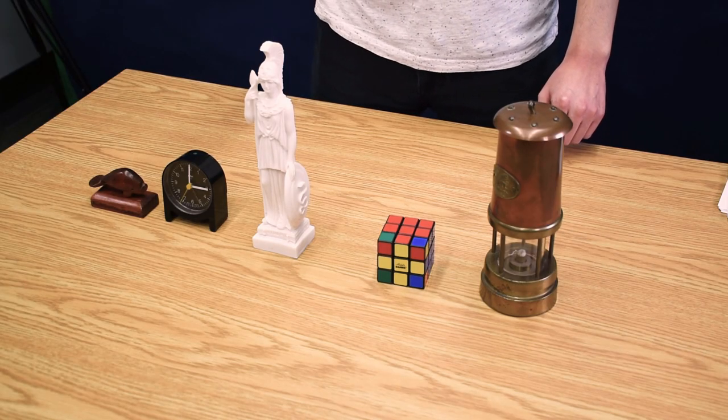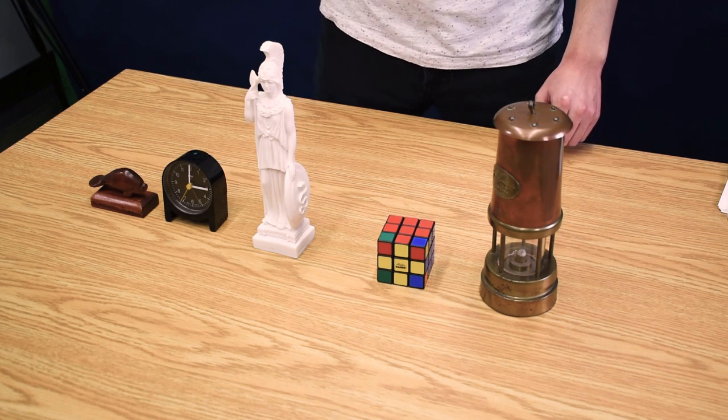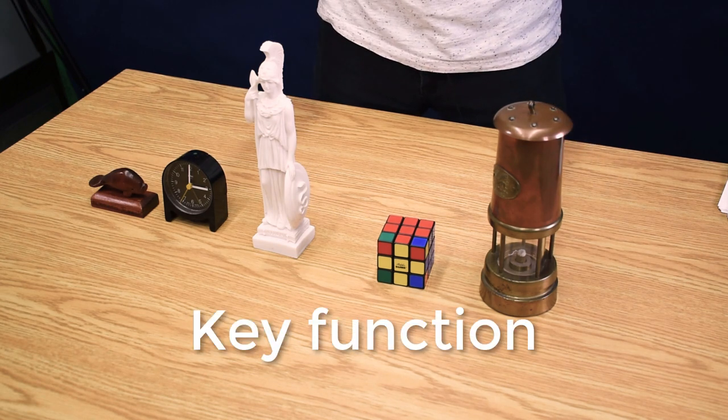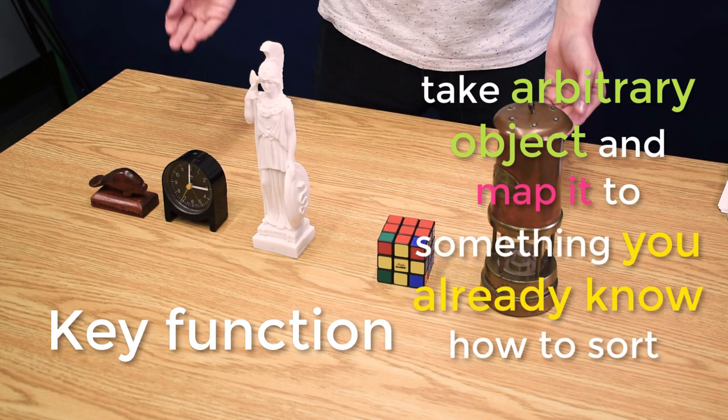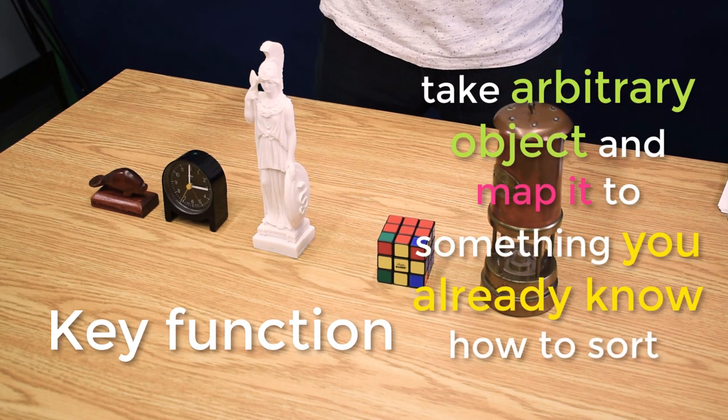What I neglected to tell you is the criteria by which I sorted the trinkets, or rather, the key function. A key function takes arbitrary objects like these trinkets and maps the objects to something I already know how to sort.